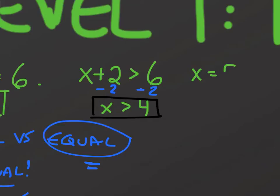We could say x equals 5, because 5 plus 2 is 7, which is greater than 6. x could be 10, because 10 plus 2 is 12, and 12 is greater than 6.